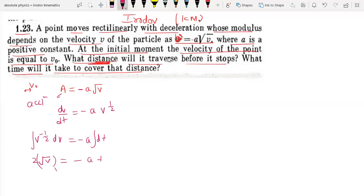This is equal to 2 root V equal to minus A t. Taking limits from V0 to 0, time 0 to t. So 2 root 0 minus root V0 equal to minus A t, and t is equal to 2 root V0 by A. This is the time taken to stop.